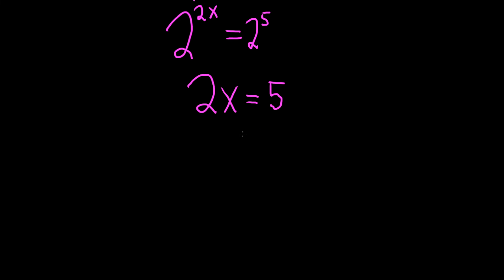And to finish, all we have to do is divide by 2. So we divide by 2 and we end up with x equals 5 over 2. And that should be the final answer.